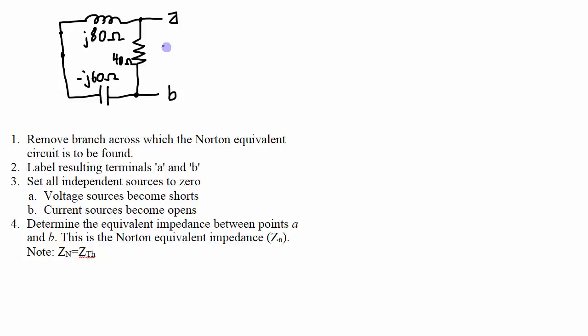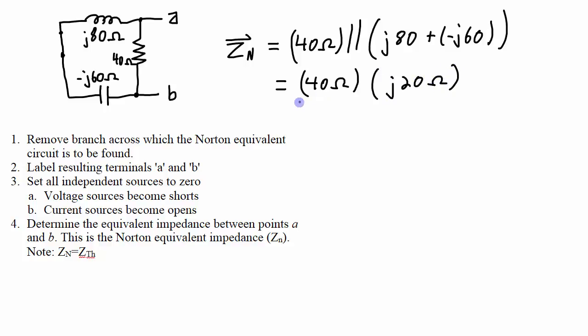So I am trying to find the impedance looking back into points A and B. So what it will be is this 40 ohm resistor in parallel with this J80 ohm inductor and this minus J60 ohm capacitor. My Zn is going to be 40 ohms in parallel with J80 plus negative J60 ohms. And that calculation gives 40 ohms times J20 ohms divided by 40 ohms plus J20 ohms, which works out to 8 plus J16 ohms.